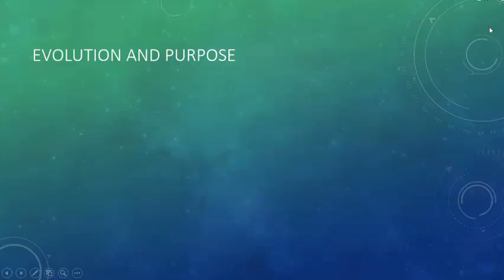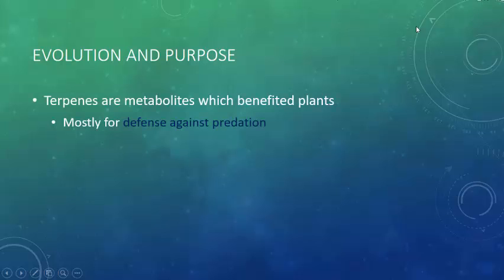Let's talk about the evolution and purpose of terpenes. Terpenes are metabolites which benefited plants, and it turns out that mostly terpenes are used for defense against predation. However, they are also used all over the place for many different functions — defense against predation being essentially one key benefit.